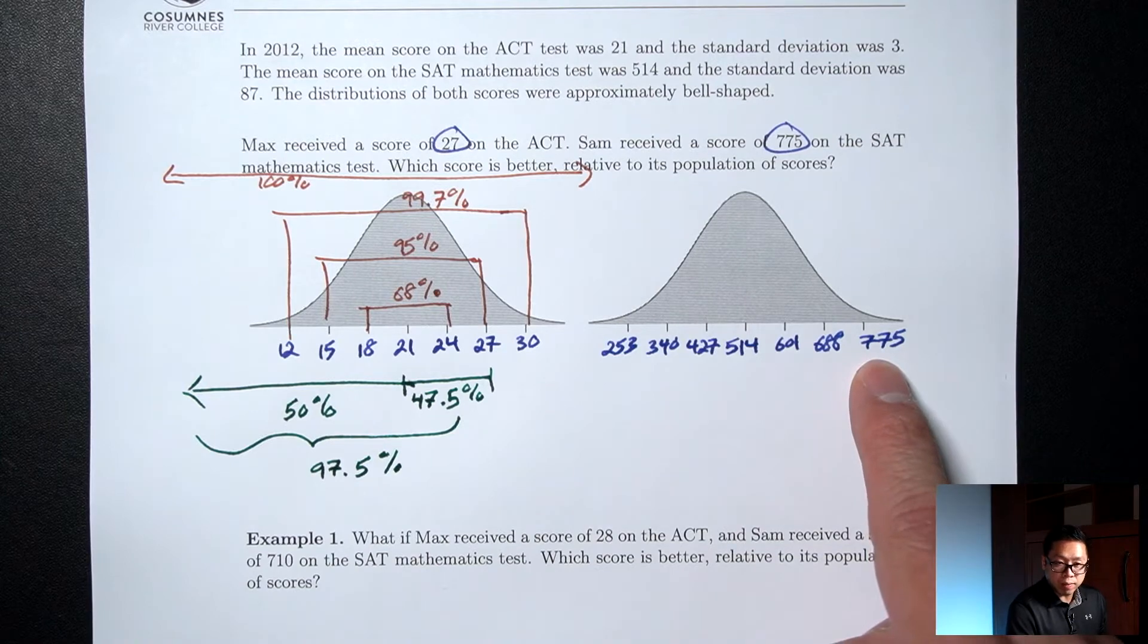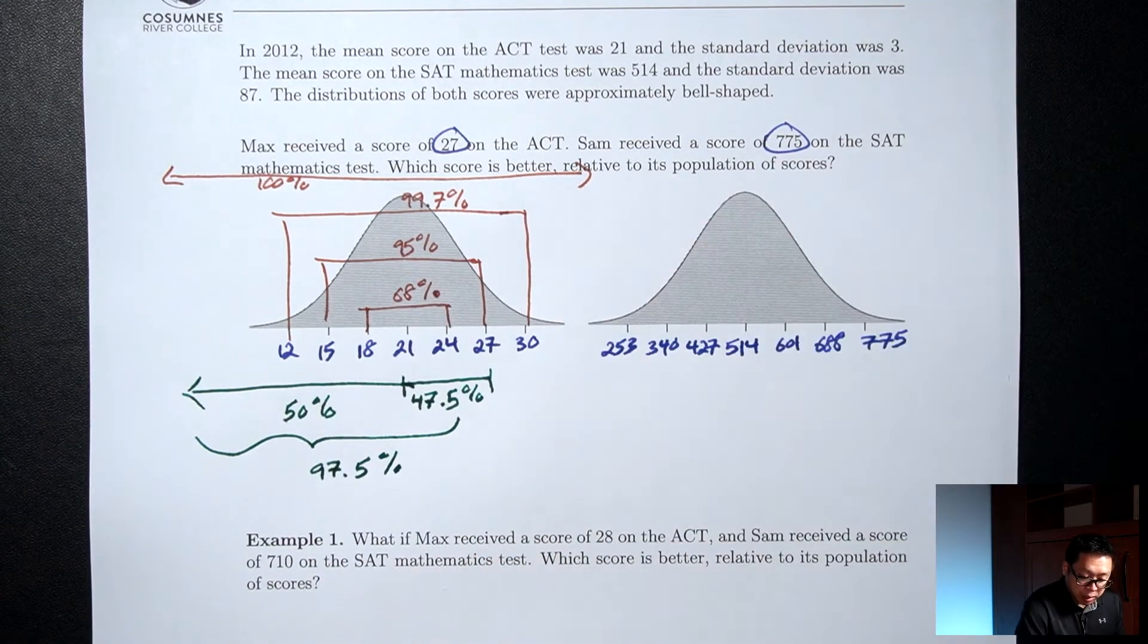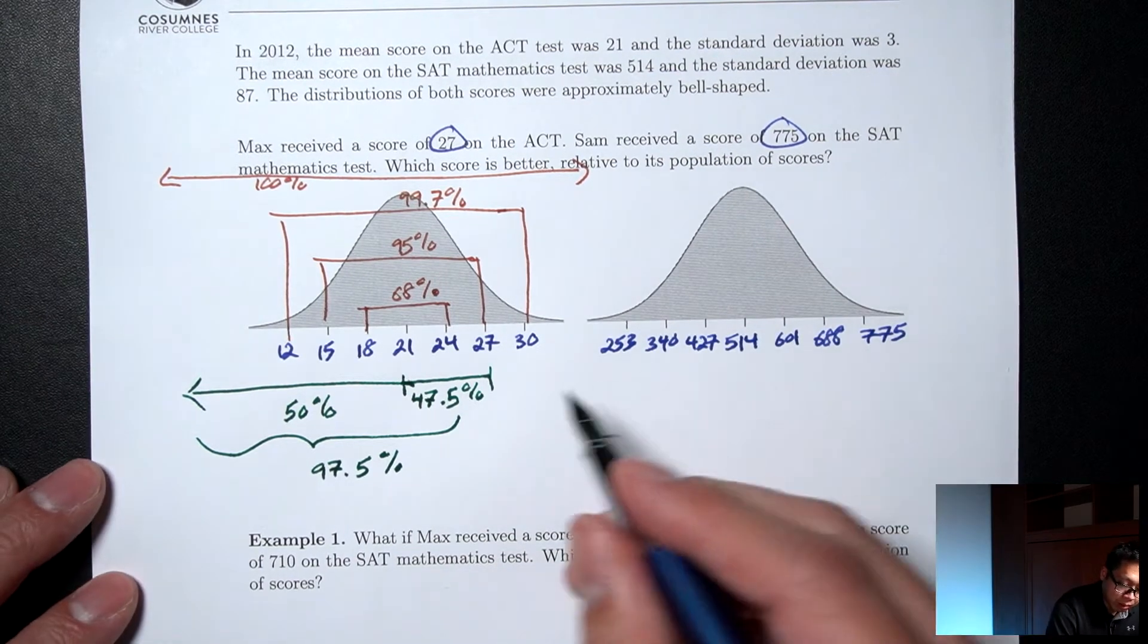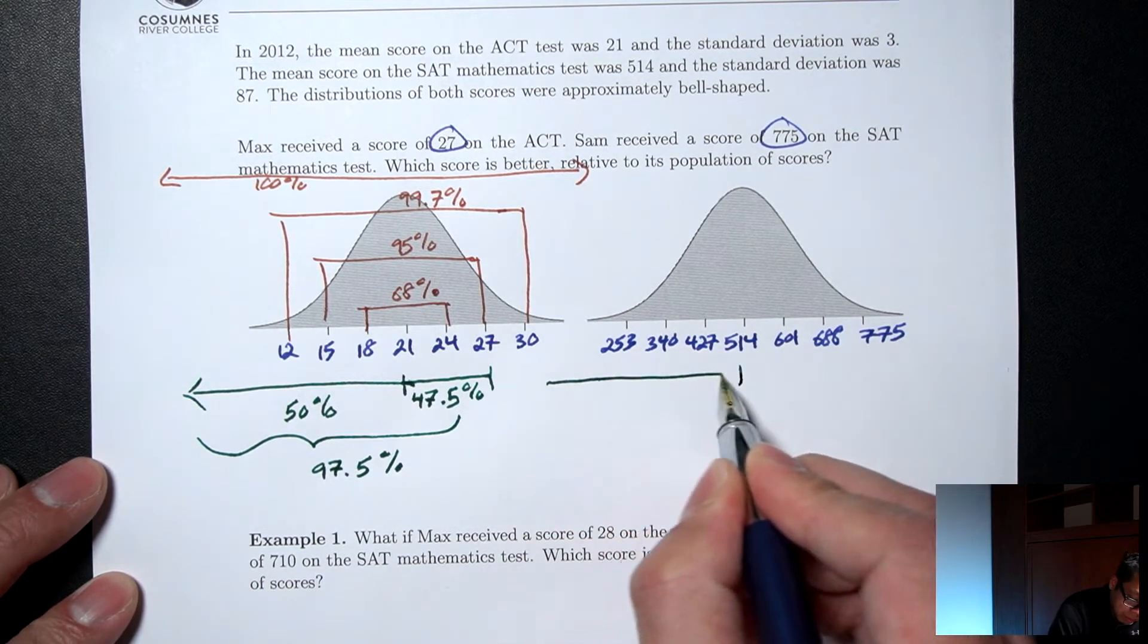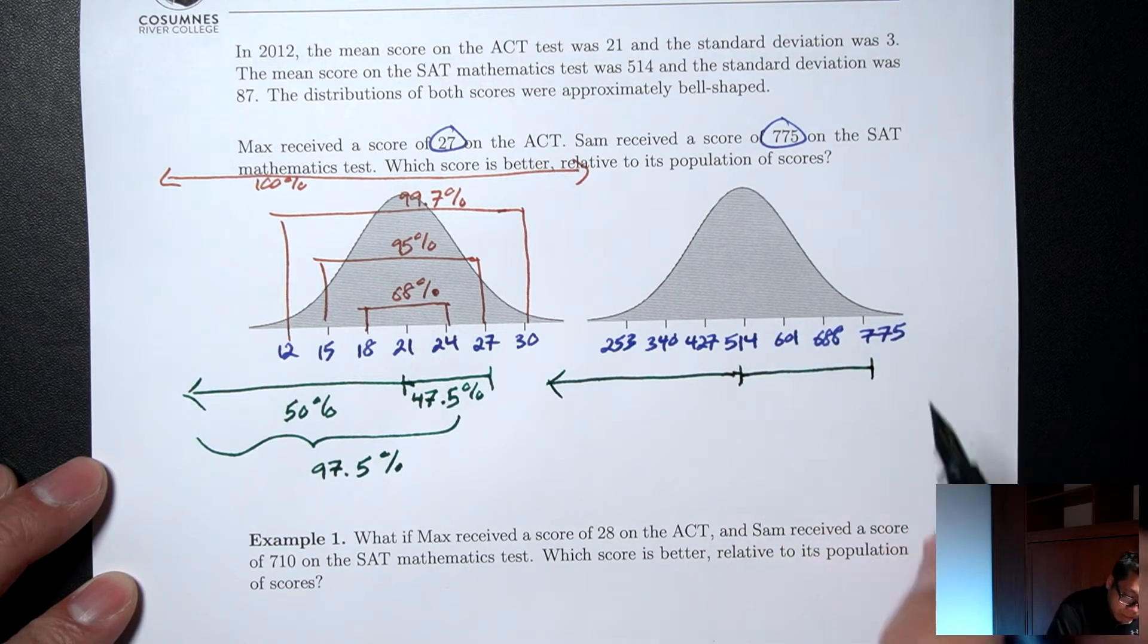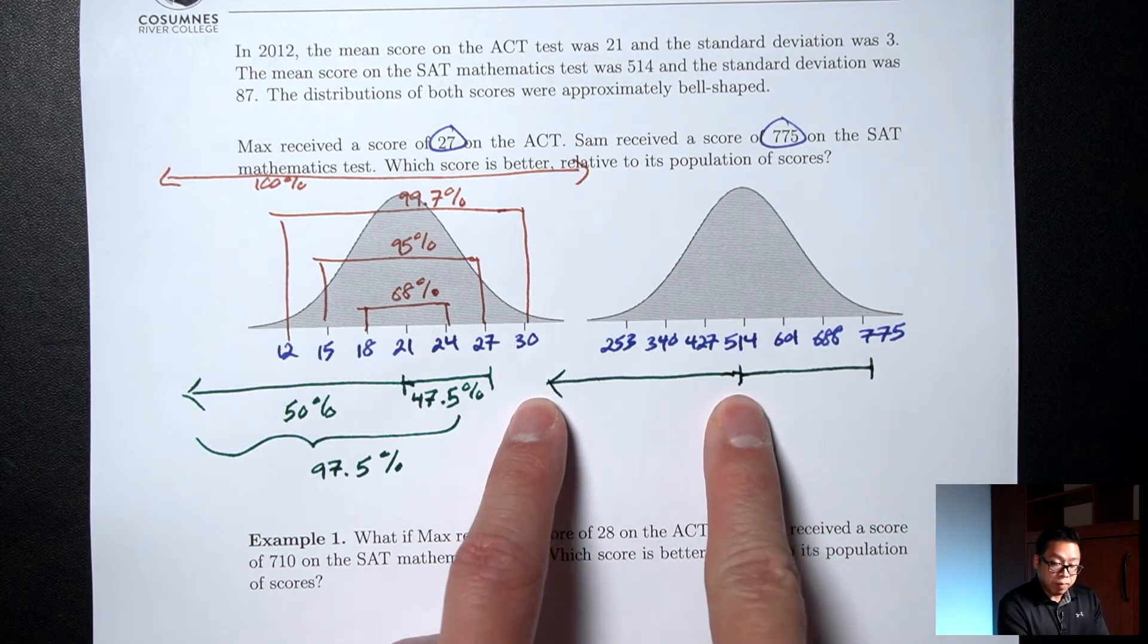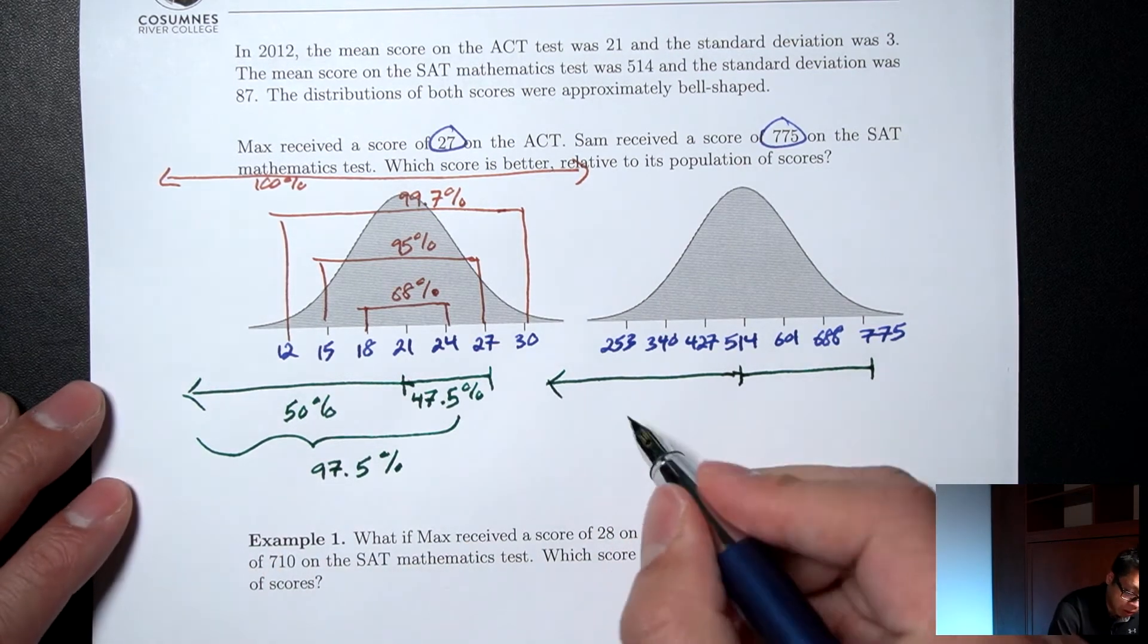Let's do the same thing for the 775. These percentages are the same, so I'm not going to write them again. But I do want to know what percent is to the left of 775. So I'm going to do it the same way. Middle to the left first, and then middle to 775. Middle to the left, for the same reason that middle to the left here is 50%, middle to the left is 50% also.